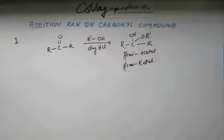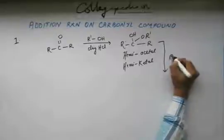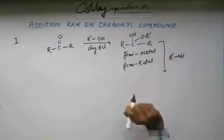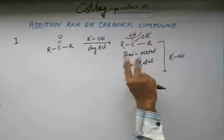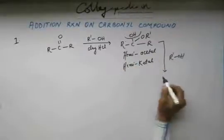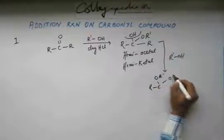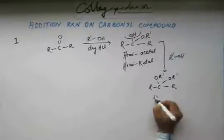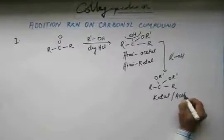So first we have a formation of hemiketal, we will see the mechanism how this has been formed. Next what happens, one more alcoholic group gets added. This OH will come out, first H plus is added, this becomes water and then water becomes a good leaving group and a new alcohol can be added. So this carbon will have two alcoholic groups added on it. Now this is ketone, if we would have taken aldehyde then this would have been acetyl.